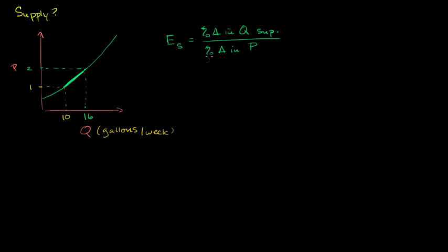What is our percent change in price? We went from $1 to $2, so we went up by $1. We don't use the starting point as our base like we would when traditionally finding a percent change, because we want to have the same percent change whether we go from 1 to 2 or from 2 to 1. So the convention when we think about elasticities is to use the midpoint — the average of the two. So 1 plus 2 is 3, divided by 2 is 1.5. It's $1 over $1.50, which is about 67%.